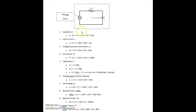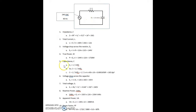Week 7's quiz was on resistive capacitive series and parallel circuits. Let's cover the series circuit first. We're given a circuit with an AC voltage source of 240 volts at 60 hertz. We have a 12 ohm resistor connected in series with a capacitor that has a capacitive reactance of 16 ohms. We're asked to calculate various values.